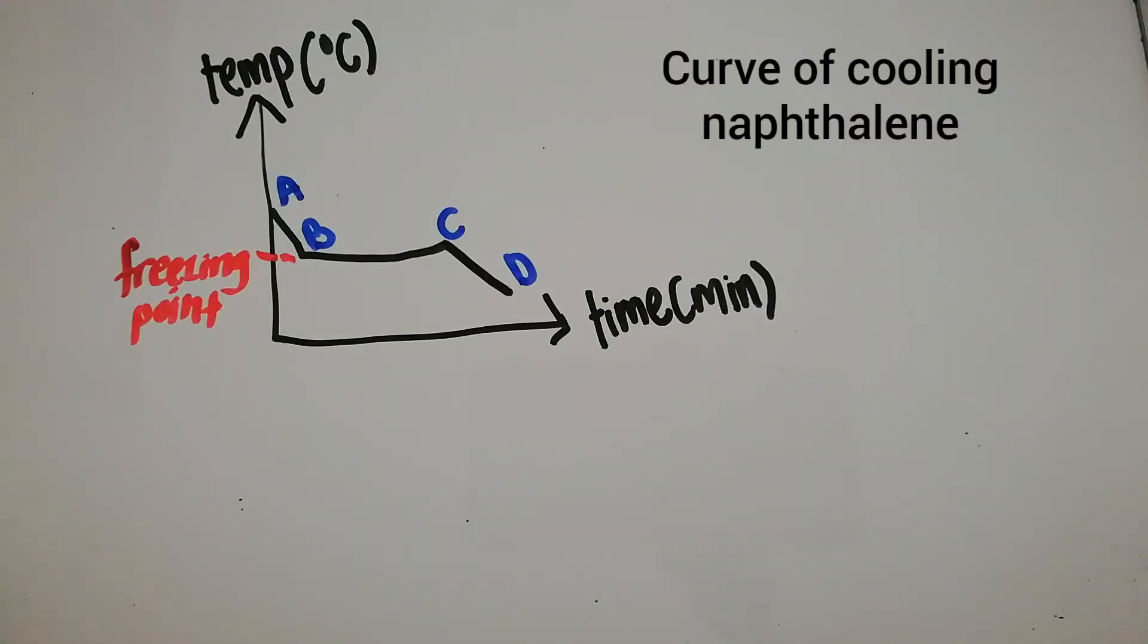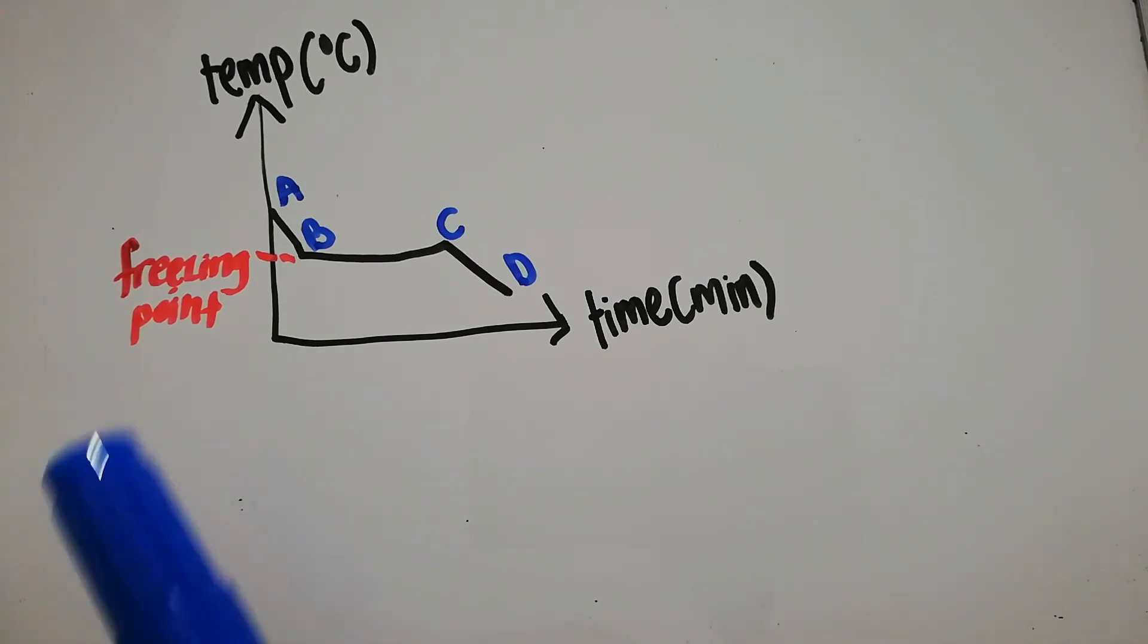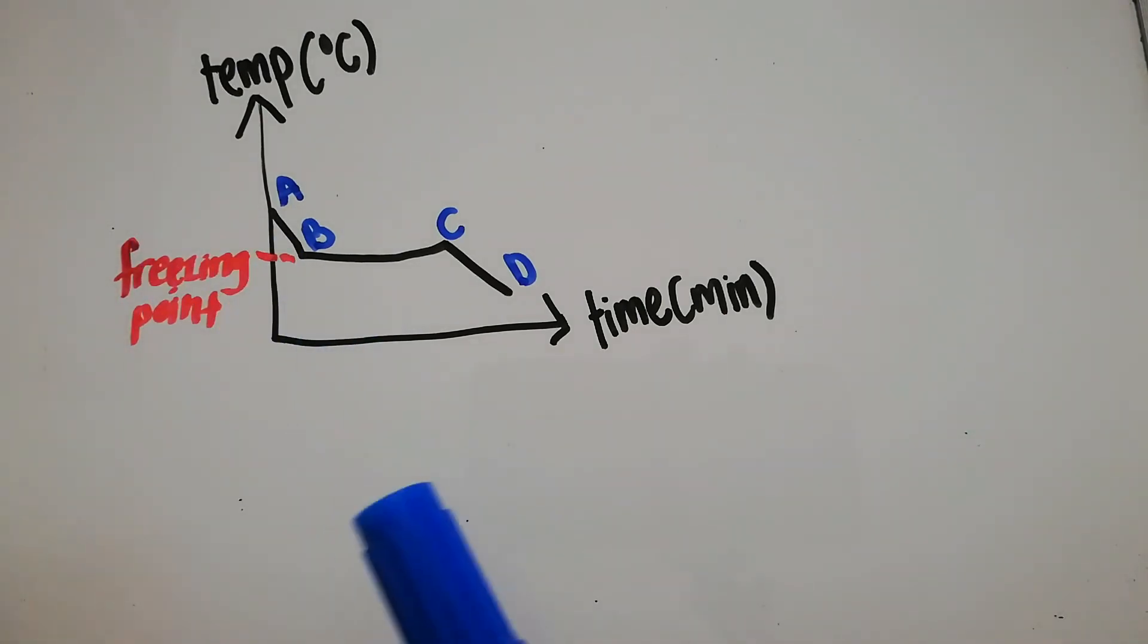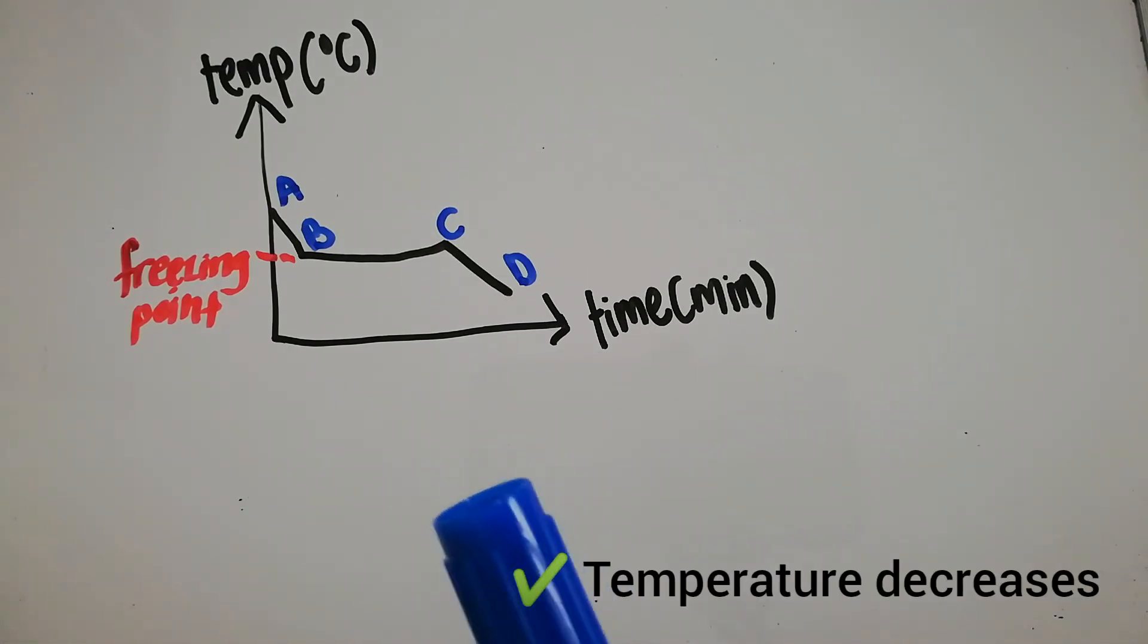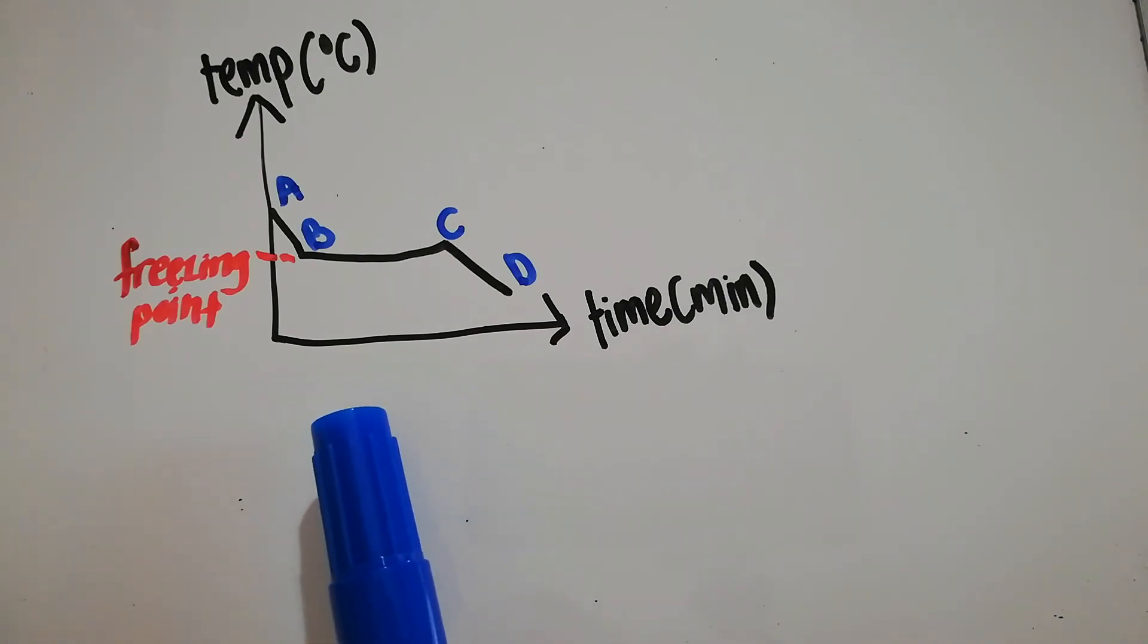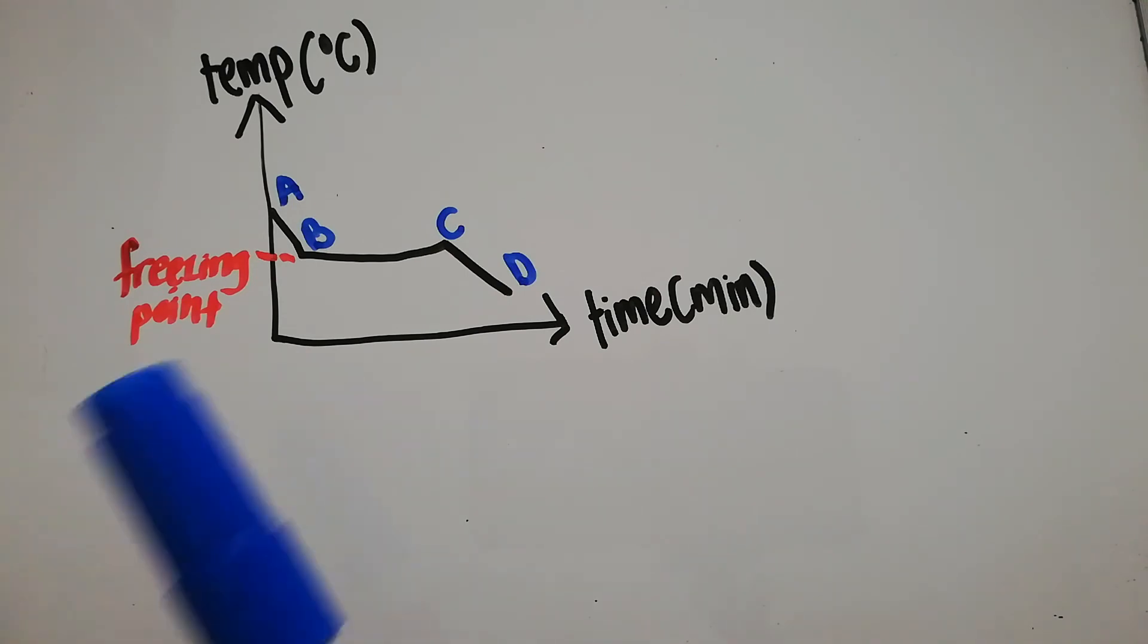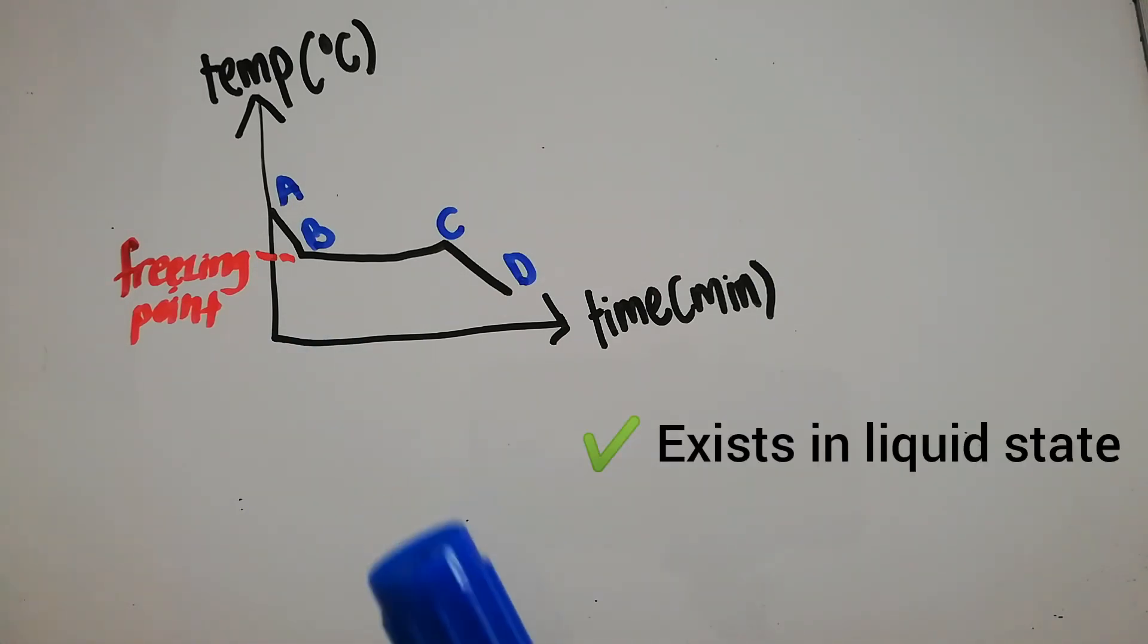This is the curve of cooling naphthalene. From point A to B, we can see that the temperature decreases as the time increases. When it is cooled, the particles release heat and move slower due to the loss of kinetic energy. At this point, it exists in liquid state.